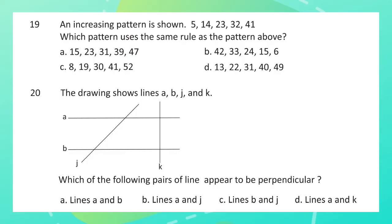Question 20: The drawing shows lines A, B, J, and K. Which of the following pairs of lines appears to be perpendicular?